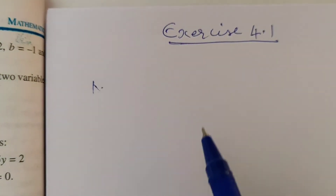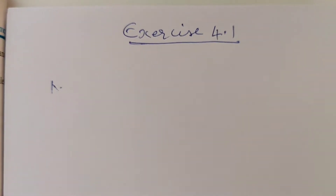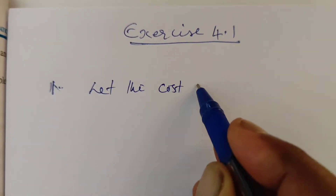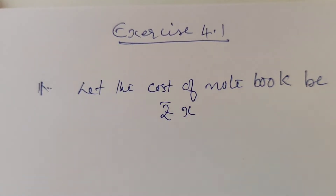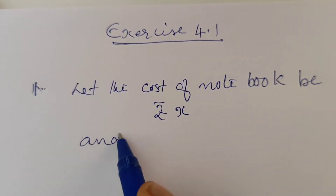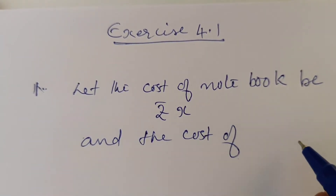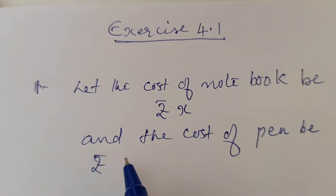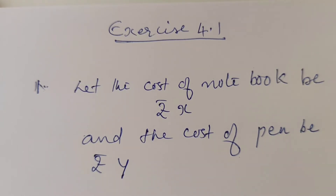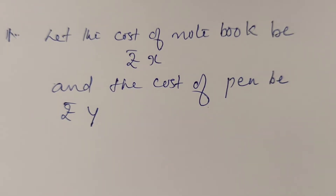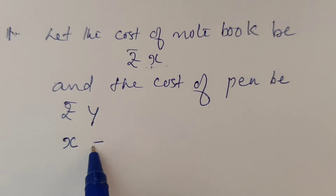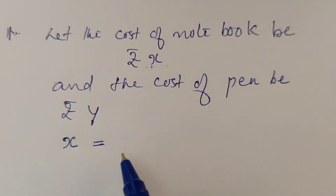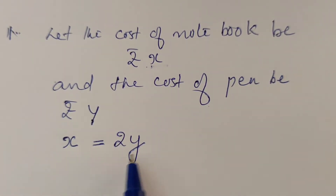First, we need to define the variables. Let the cost of a notebook be rupees x, and the cost of a pen be rupees y. Now the condition is: the cost of the notebook is twice the cost of a pen. Notebook variable is x, and double means 2 times y. So x is equal to 2y.